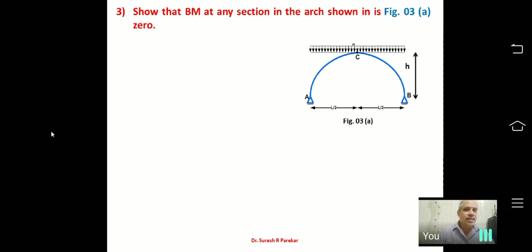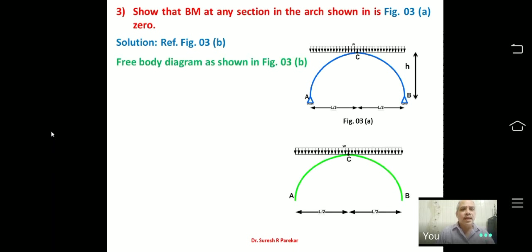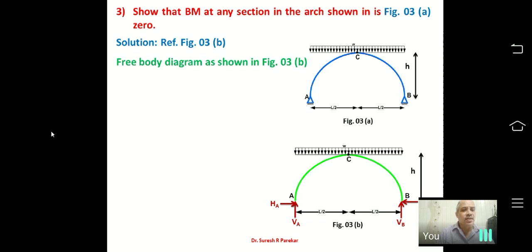First we will find the reactions using the free-body diagram. Removing support A, we get reactions VA, HA at A and VB, HB at B — four reactions in total. We have four equilibrium equations, so we are in a position to find out all these reactions.